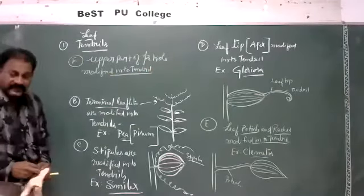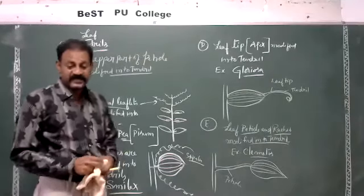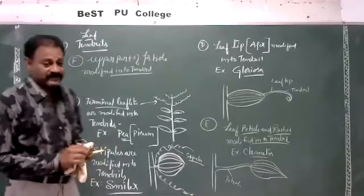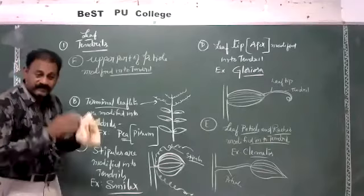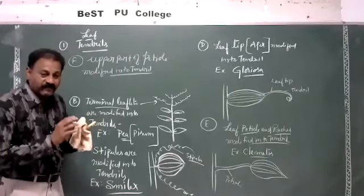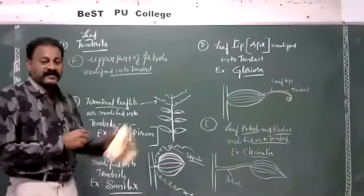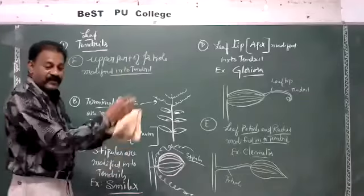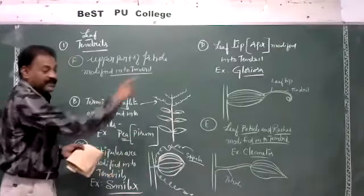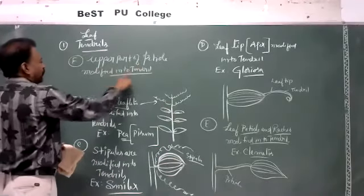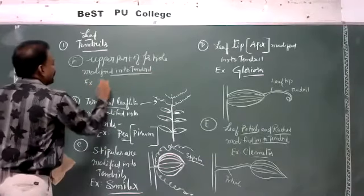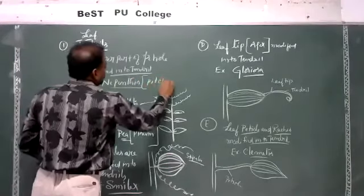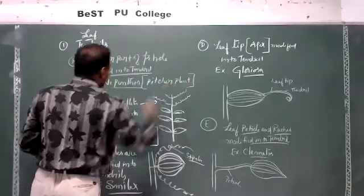My dear students, in the NCERT textbook as per the prescribed syllabus, they generally give one or two examples. But from previous years and the scheduled syllabus of PUC, so many examples of tendril or leaf modification are cited. In national level examinations, they have asked these questions — for example, matching blocks asking which part is modified into tendril. So all this material is useful. The upper part of the petiole is modified into tendril in Nepenthes, the pitcher plant, which is an insectivorous plant.